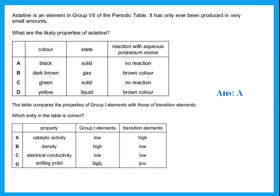The next question says the table compares the properties of group 1 elements with those of transition elements. Which entry in the table is correct? So if we're talking about catalytic activity, which one would be a catalyst? Remember we said transition elements are the ones that are catalysts. So this is the one that will have high catalytic activity. So actually A is correct.